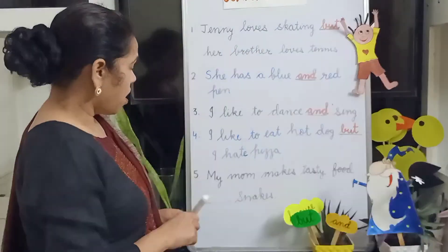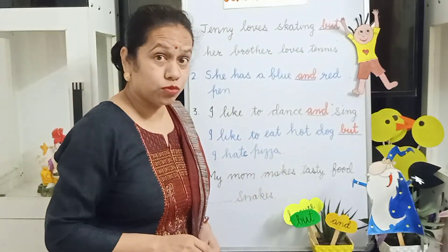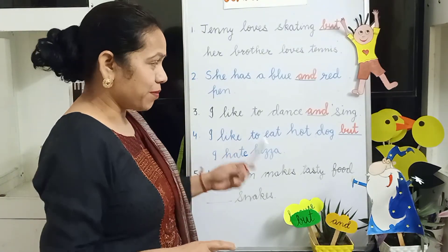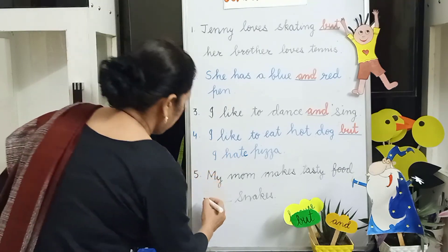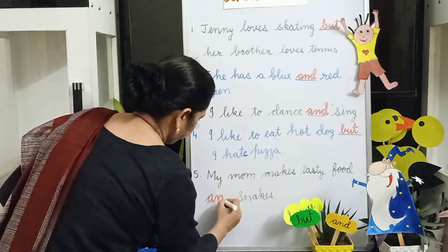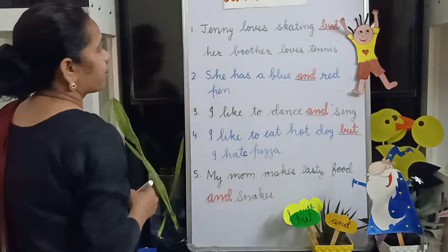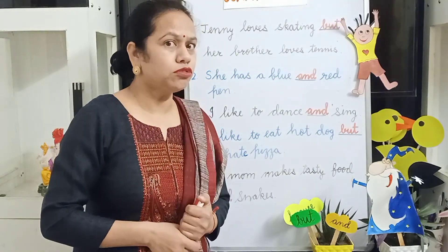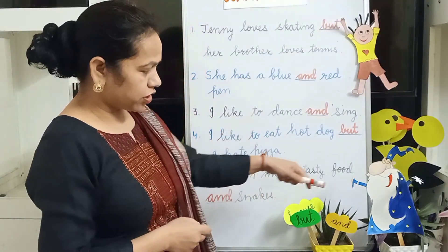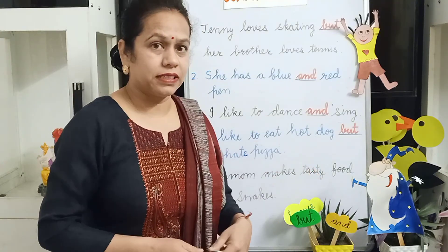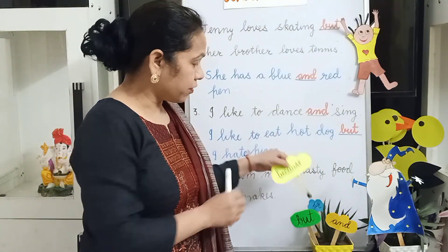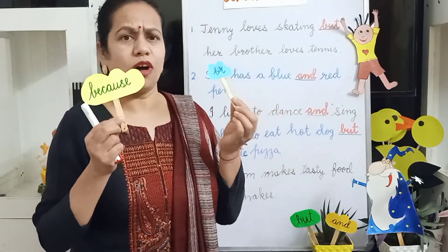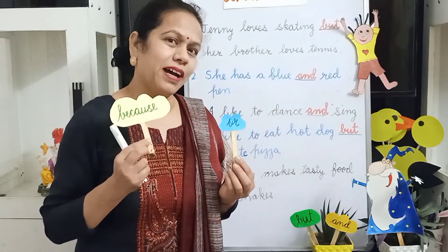But. My mom makes tasty food and snacks — conjunction 'and.' Okay, so I hope children, now you are able to use conjunction 'and' and 'but.' In the next video, we will do conjunction 'because' and 'or.' Till then, bye-bye.